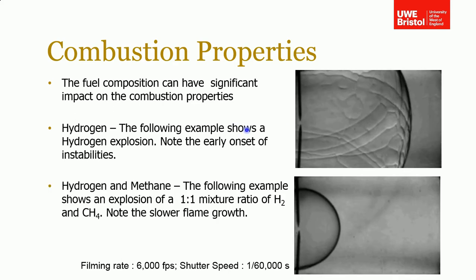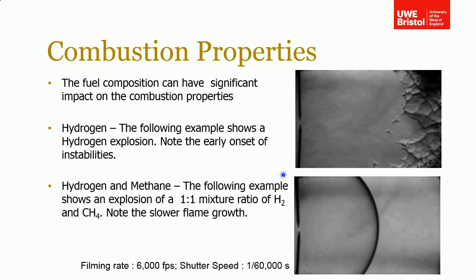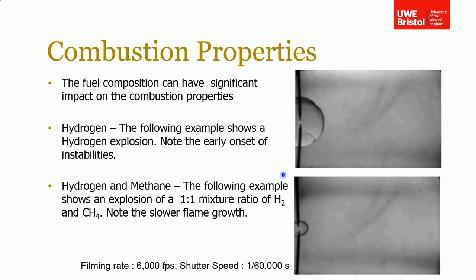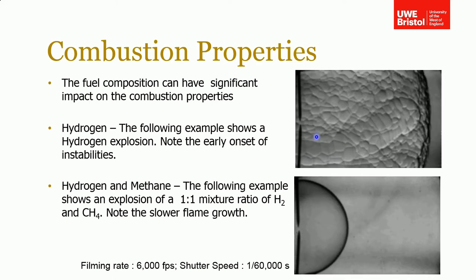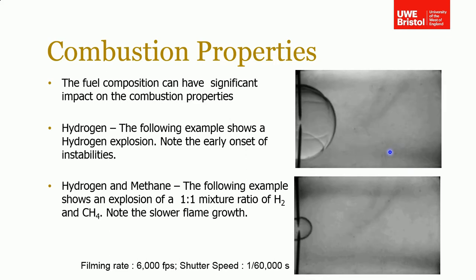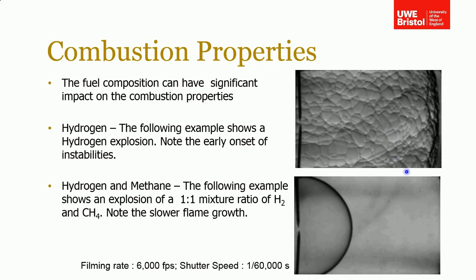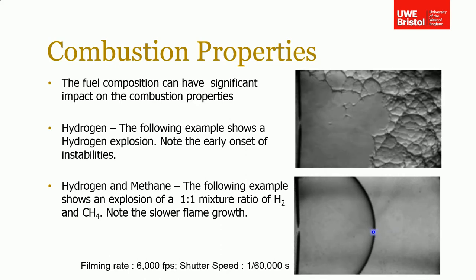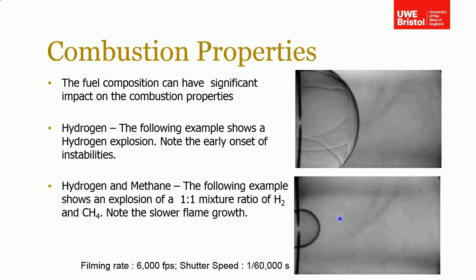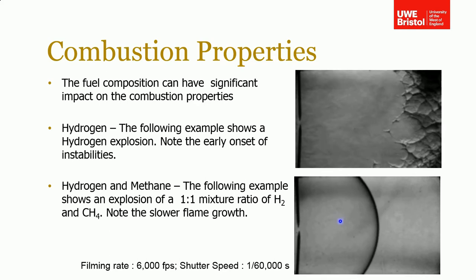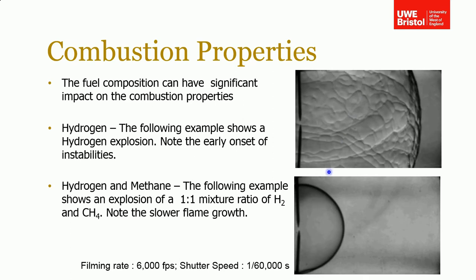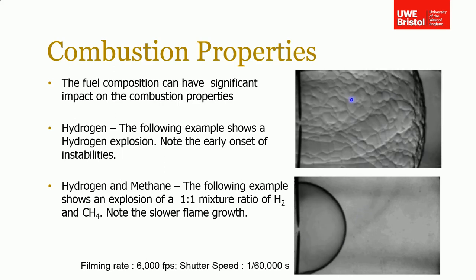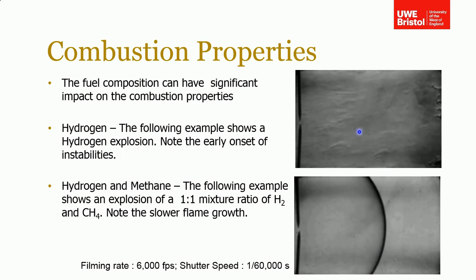Comparing that to a mixture of 50-50 hydrogen and methane, started at the same time, you can see the difference in flame speed between these two mixtures. Hydrogen burns very quickly, and although the 50-50 mixture is much faster compared to 100% methane, it's obviously a lot slower than 100% hydrogen. You also notice the flame here is much more laminar — there's none of that wrinkling or turbulence visible in the hydrogen one.